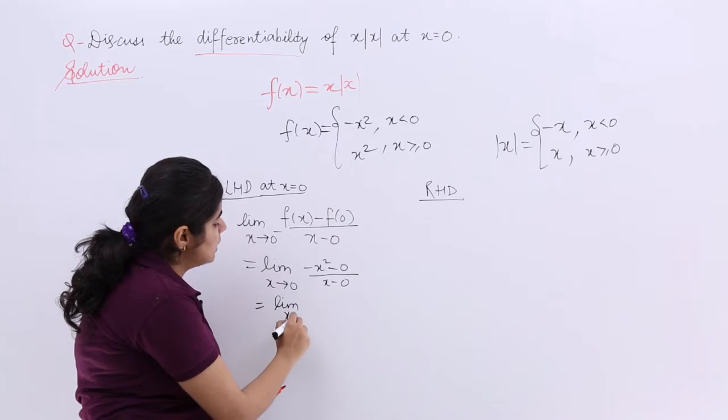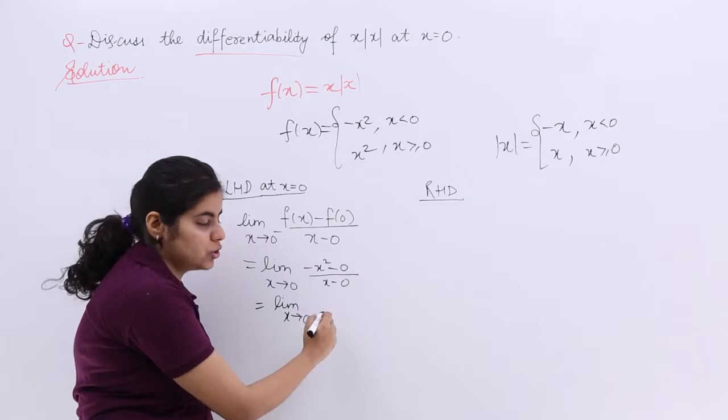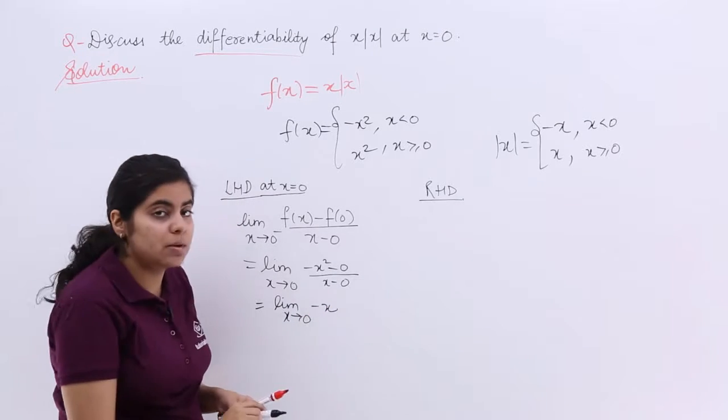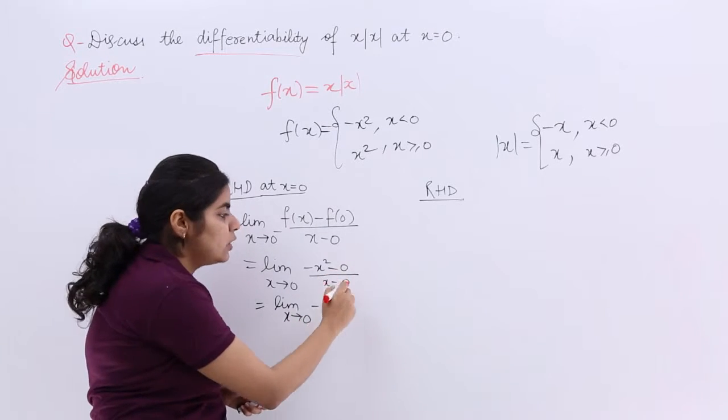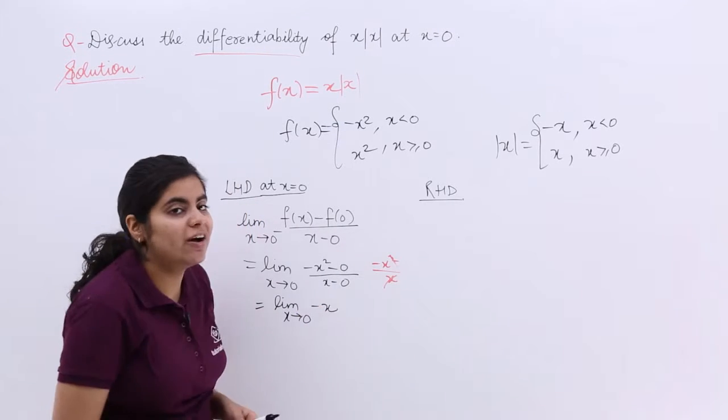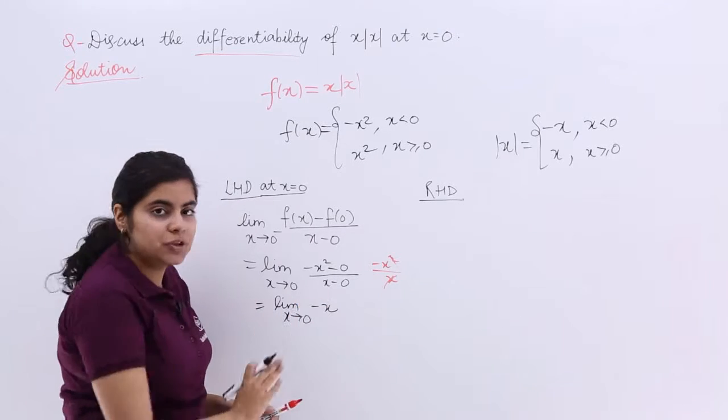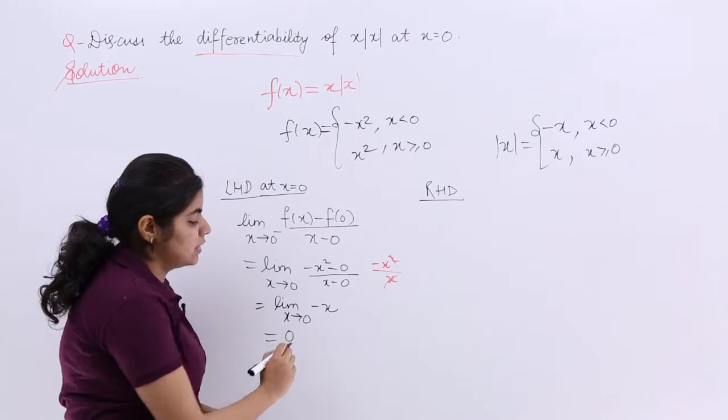Limit x tends to 0 minus x square minus x in division. It becomes minus x because what is it? Minus 0 minus 0 will vanish. It will be minus x square upon x. So you have minus x. Limit x tends to 0 for minus x means you are directly substituting 0 there. So you get the answer as 0.